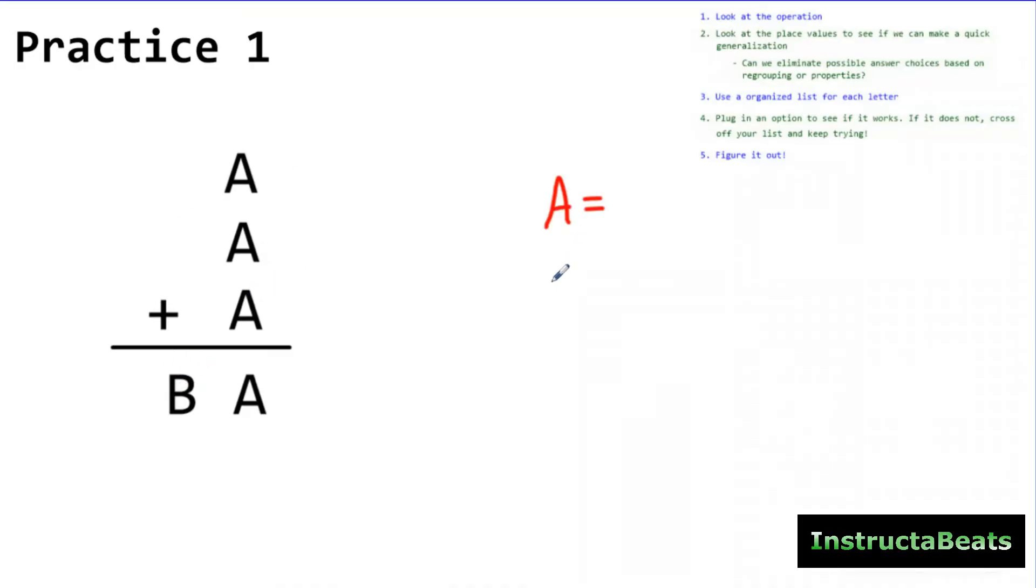Which means when I'm making my organized list, I know B can either be 1 or 2. Because I had to regroup to the tens place. And the biggest digit I have is 9. So if I did 9 plus 9 plus 9, that would be 27. If I did 5 plus 5 plus 5, that would be 15 and I have to regroup a 1. So B can only be 1 or 2. So I've already eliminated a lot of different options there.